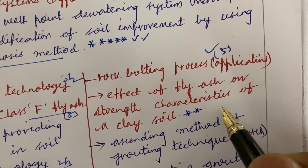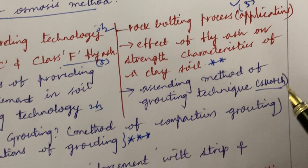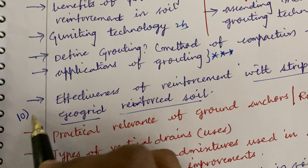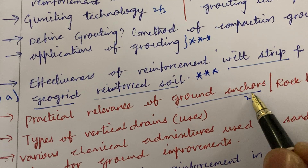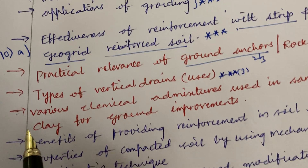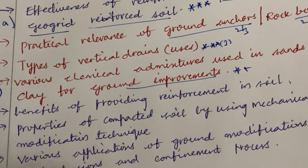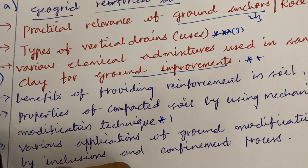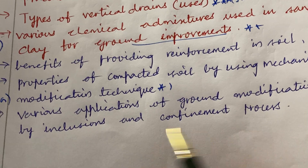The effect of fly ash on strength characteristics of a clay soil. Dear students, you have less time to work out — work out each and every parameter highlighted here. Ascending method of grouting technique with a neat sketch, and the effectiveness of reinforcement with strip and geogrid steel reinforcement, is said to be a 10A question this time — do not forget to work out this. Practical relevance of ground anchors is a 2 to 3 mark, and rock bolting is also 2 to 3 marks. Types of vertical drains and their uses is a 3 mark question. Various chemical admixtures used in sand and clay for ground improvement is a 10B question. Properties of compacted soil using mechanical modification technique is an 11A question. Various applications of ground modification by inclusion and confinement process may be a B question.